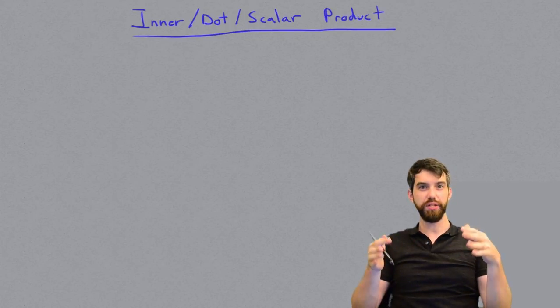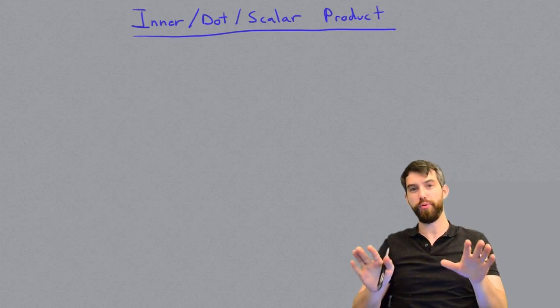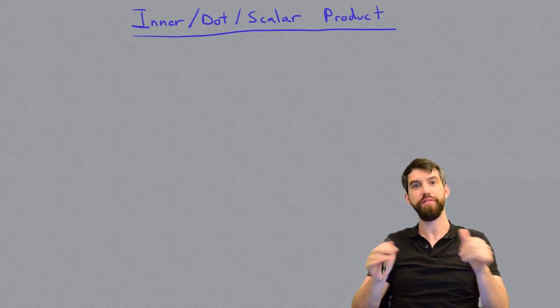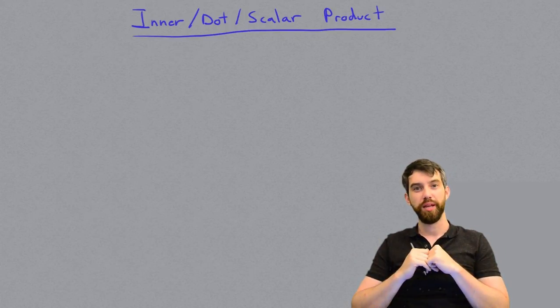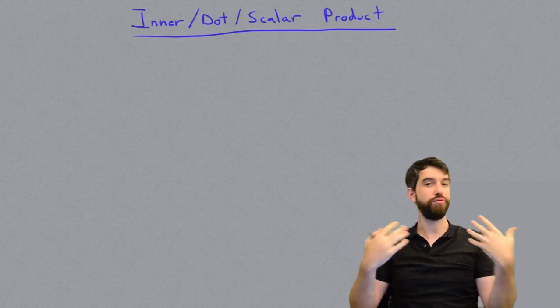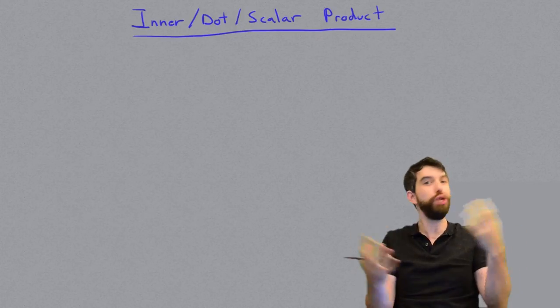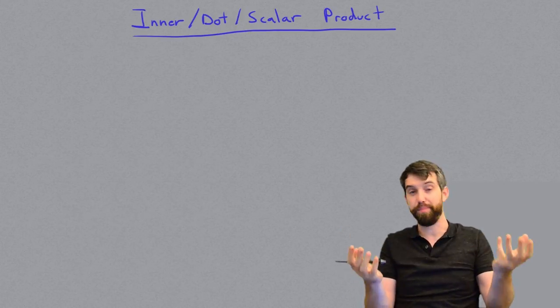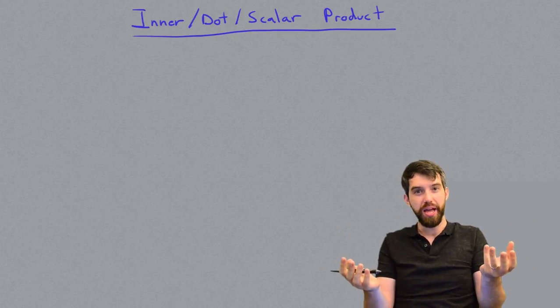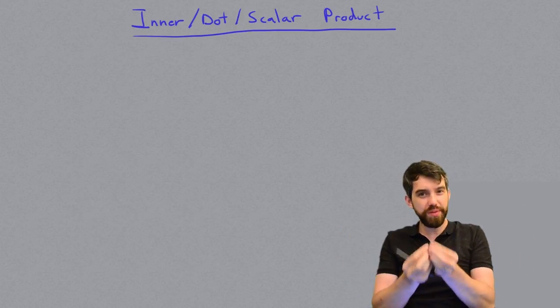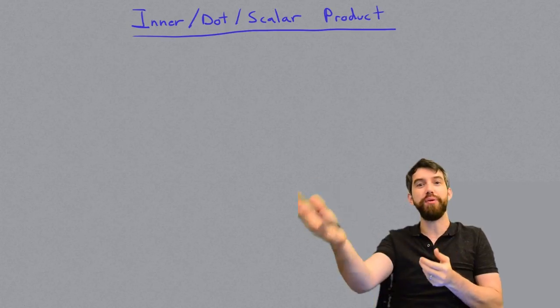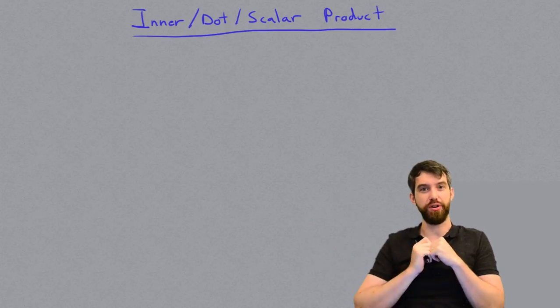So far we've seen two different operations on vectors. We had vector addition, where I take two vectors, both in Rn, we added them together and it spat out a third vector in Rn.